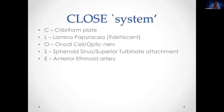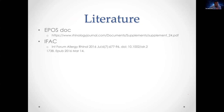Using the CLOSE system: C — cribriform plate; L — lamina papyracea, looking for dehiscence or fat/orbital content prolapse; O — Onodi cell and optic nerve running through the superolateral sphenoethmoidal wall; S — sphenoid sinus, with superior turbinate attachment determining your approach; E — ethmoid, checking the anterior ethmoidal artery for a bony mesentery. Use this systematically in all three planes before any sinus surgery. Different classification systems exist, but the key is being able to clearly explain the anatomy to colleagues.